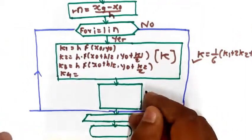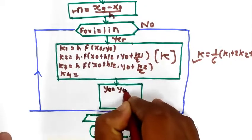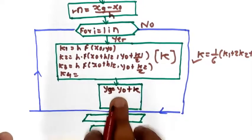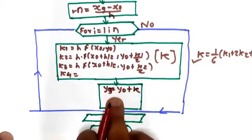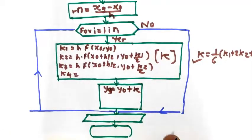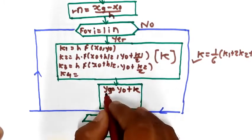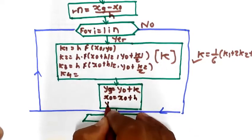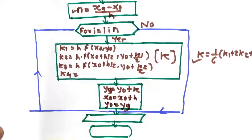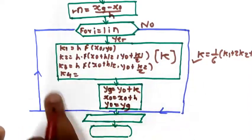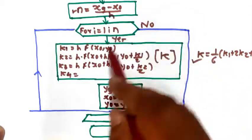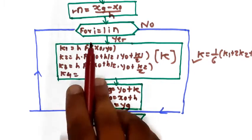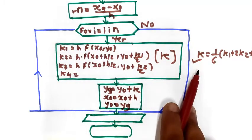The next step is to find the value of yg, which is equal to y0 plus k, where y0 is known and k is the value found in the previous process. Also, find the updated value of x0 which is x0 plus h, and set y0 equal to yg. These steps will be repeated for each iteration.